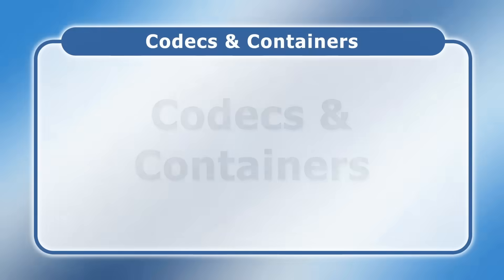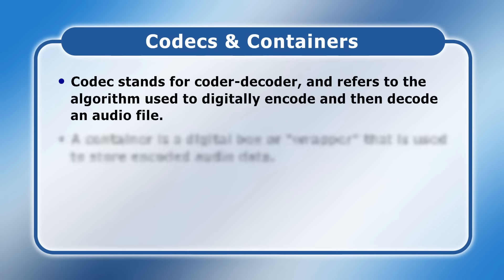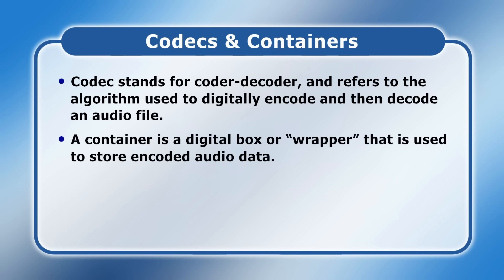To fully understand digital audio files, it's important to know the difference between a codec and a container. Codec stands for Coder Decoder and refers to the algorithm used to digitally encode and then decode an audio file. Meanwhile, a container is a digital box or wrapper which is used to store encoded audio data and potentially other media information. Fortunately, many digital audio codecs have their own unique container.